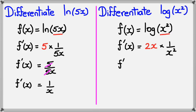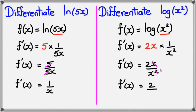Simplifying: 2x divided by x² — the x's cancel — leaving f'(x) = 2/x. That's basically it in terms of concept, but I'm going to do one more problem in the next slide — just a little trickier, but you'll get the hang of it.